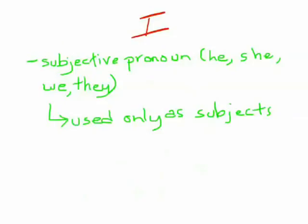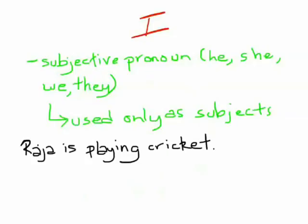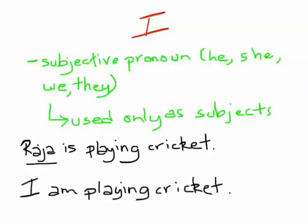For example, take a look at this sentence: 'Raja is playing cricket.' Here, Raja is the subject because he is performing the action of playing cricket. If Raja himself were to say this, he would say, 'I am playing cricket.' As you can see, 'I' has taken the place of the subject noun.